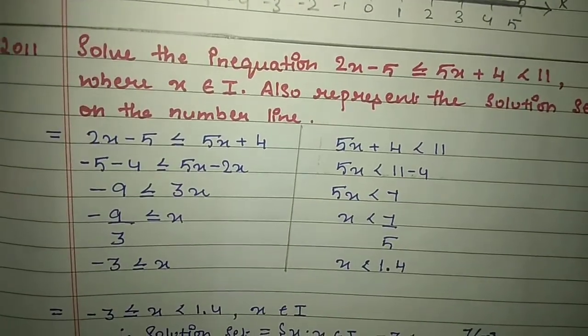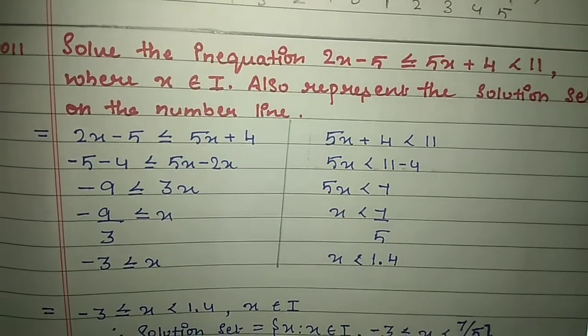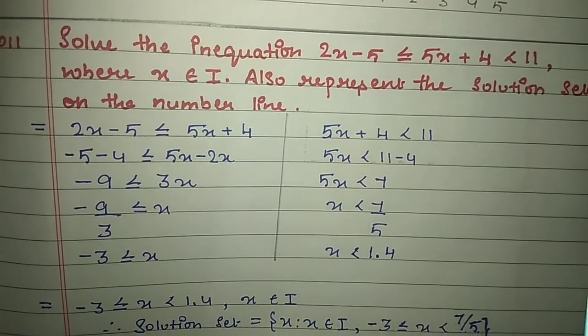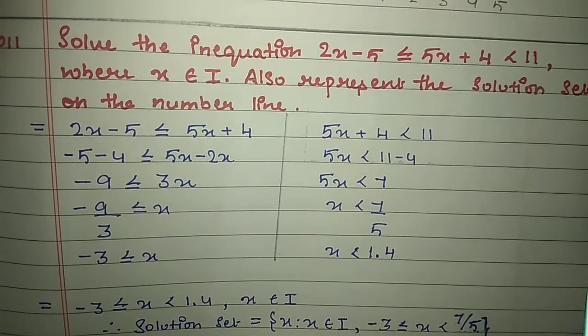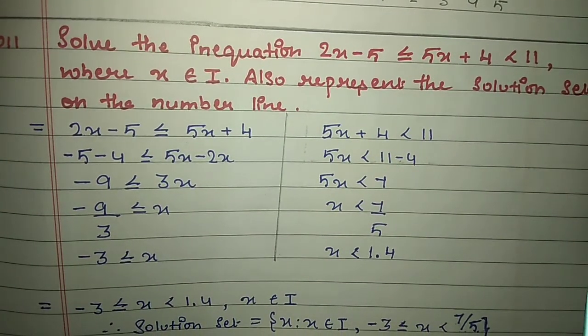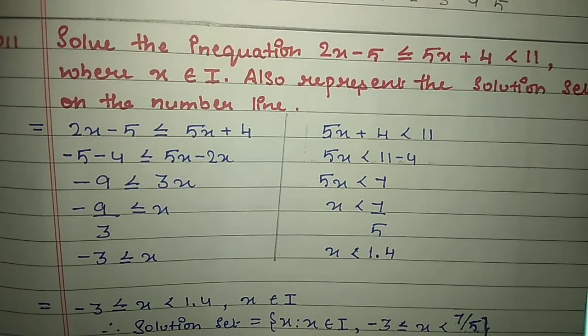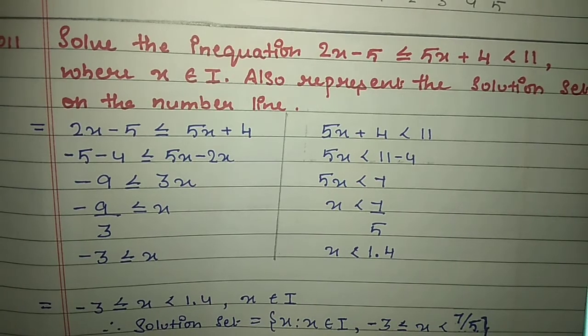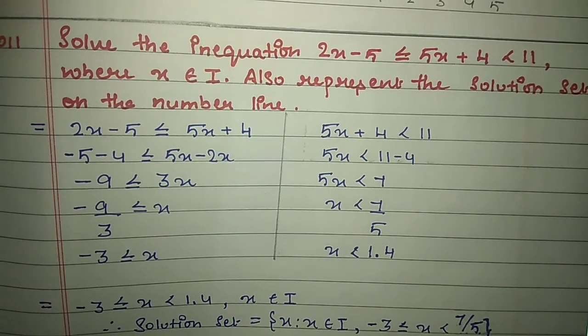Next, also from 2012: solve the inequation 2x minus 5 ≤ 5x + 4 < 11, where x belongs to integers.